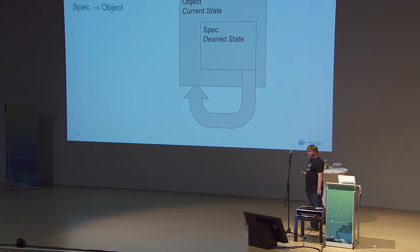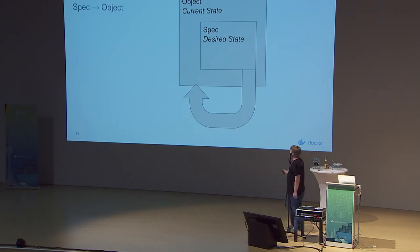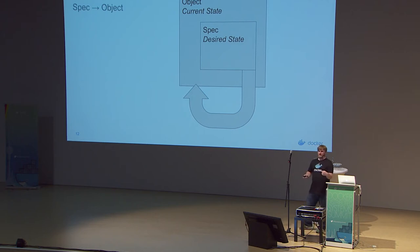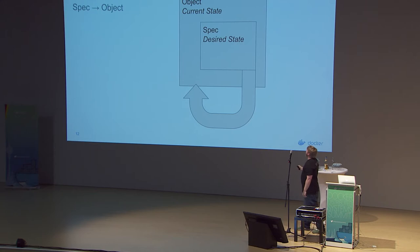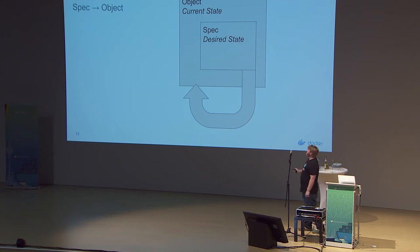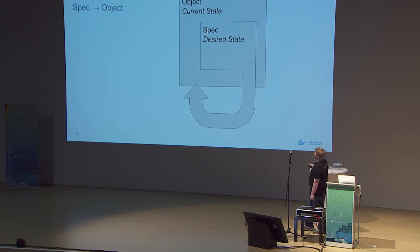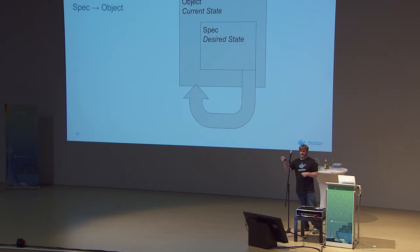In the actual object model, we have a portion called a spec, which is the user input — going back to the control systems analogy, that's D. Then we have a current state, represented and owned by the cluster. There's a loop that continually tries to take the desired state and write it back into the current state.